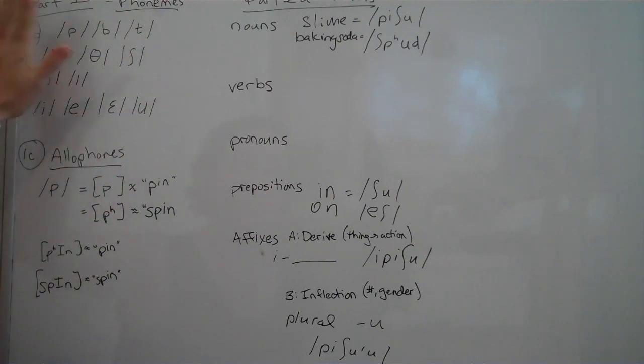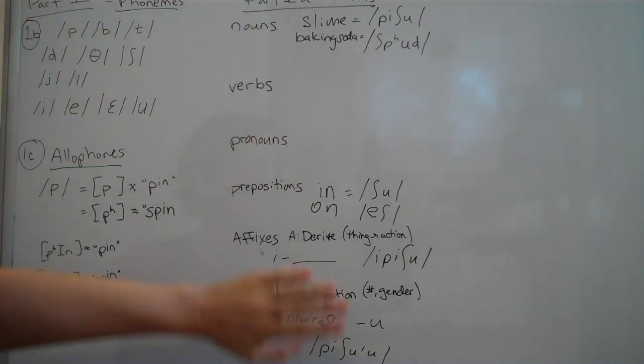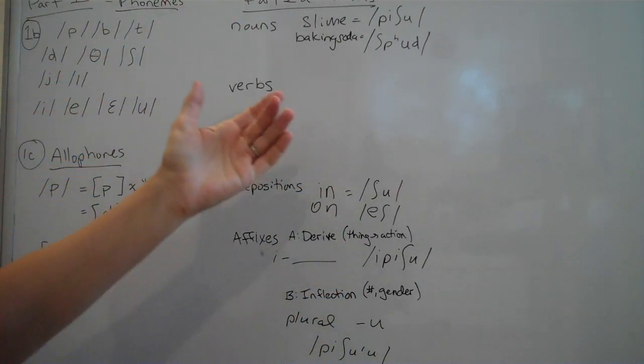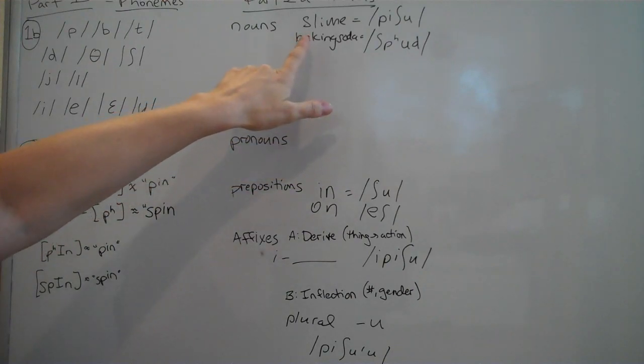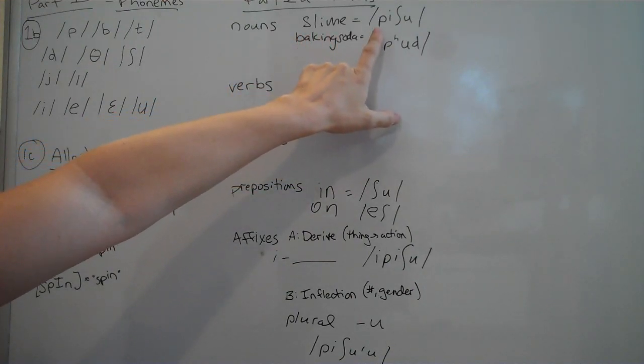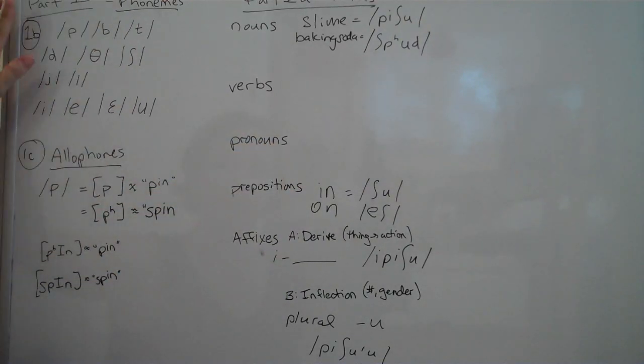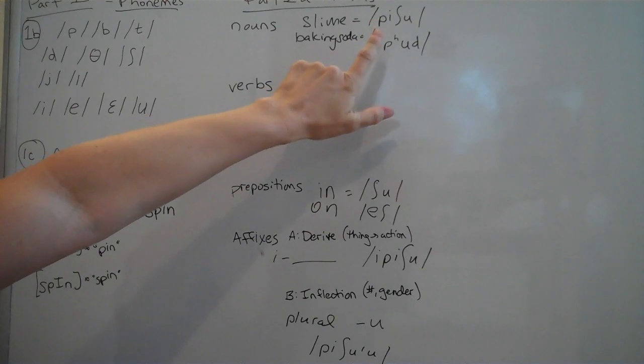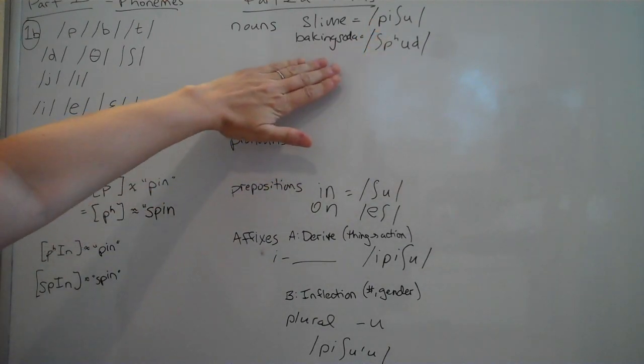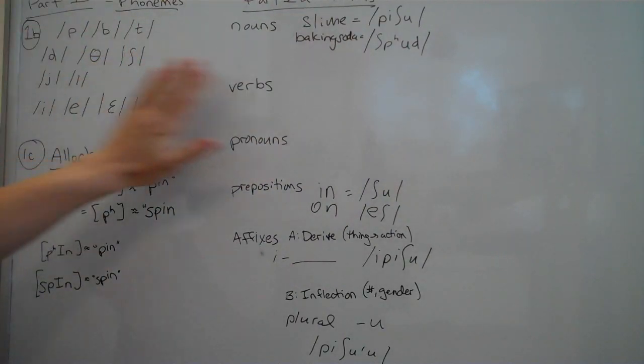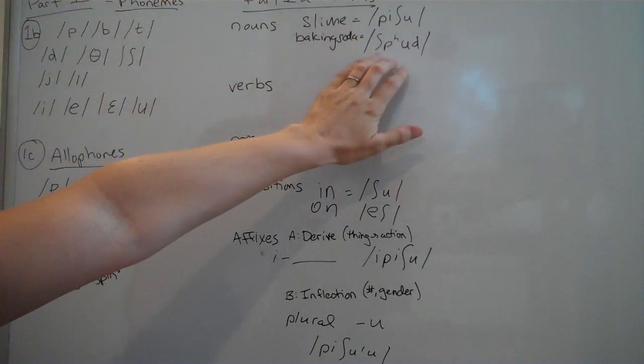And so I've taken my consonants here and made a few words just to get started. So I'm making slime for my instructional video, so I need a word for slime. And so I picked p, e, sh, u, pishu from my preselected consonants and vowels last week to make up a brand new word to mean slime. Same thing for baking soda. I picked others of my consonants to make up a new word, spud, for baking soda.